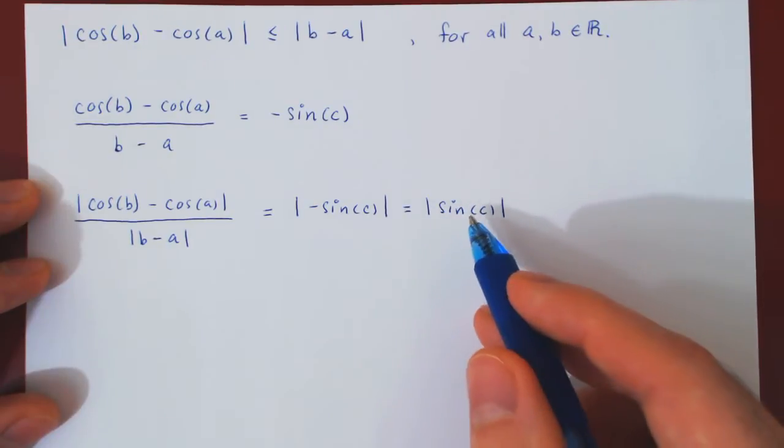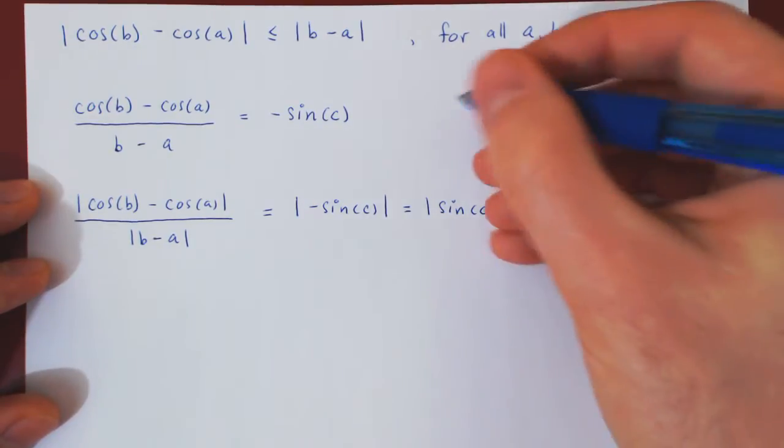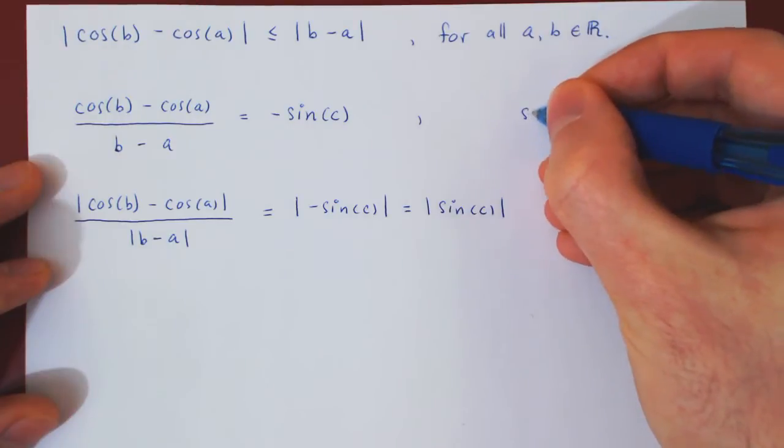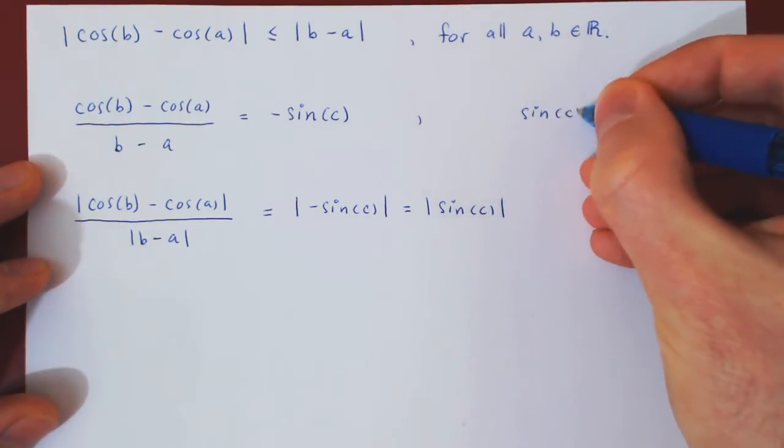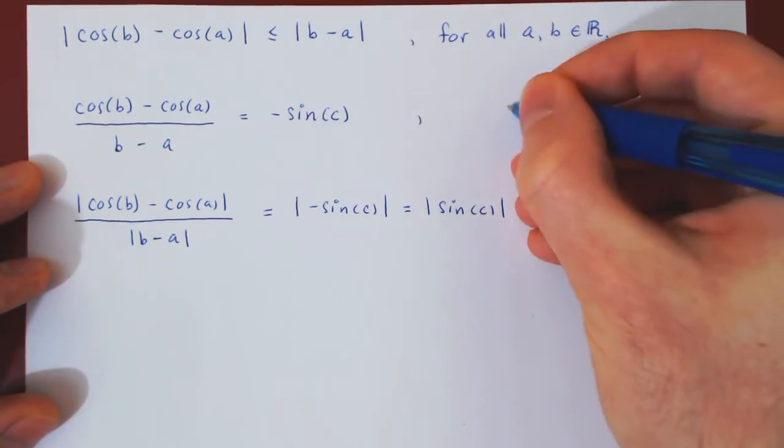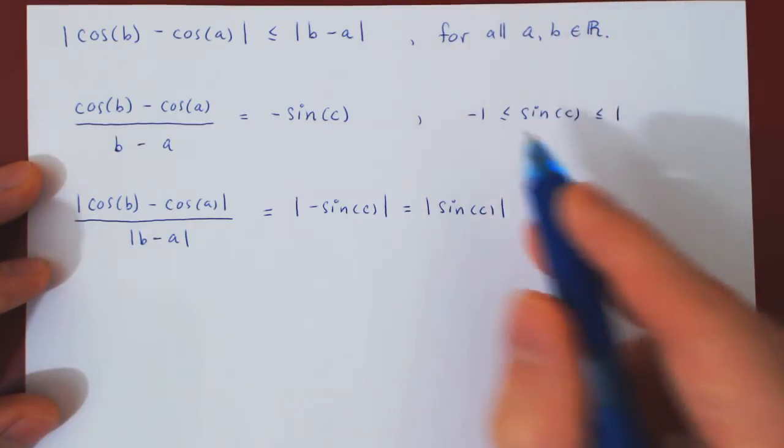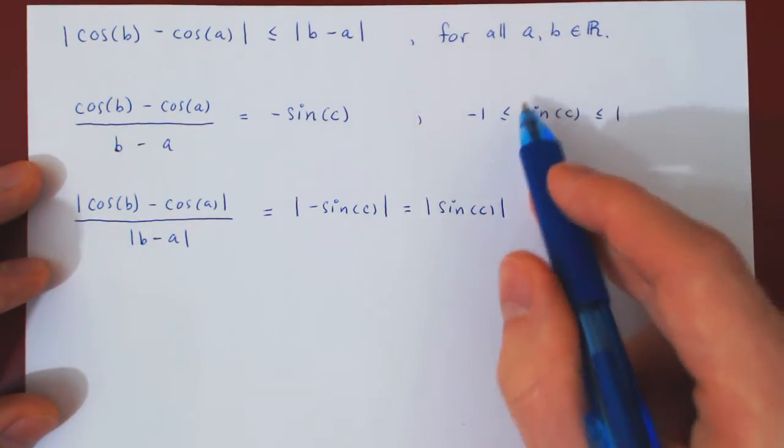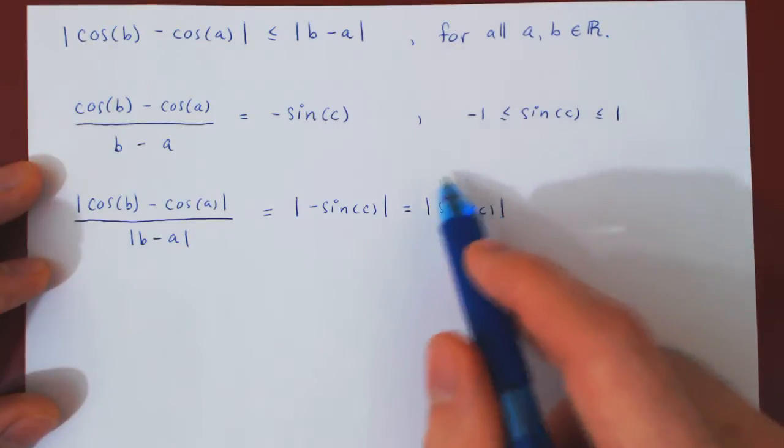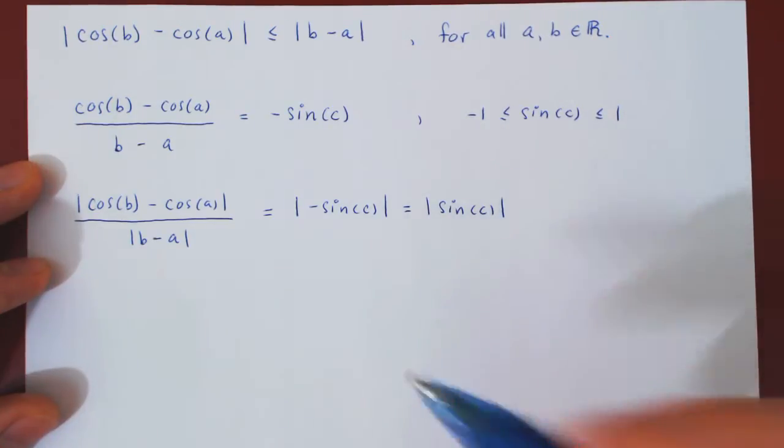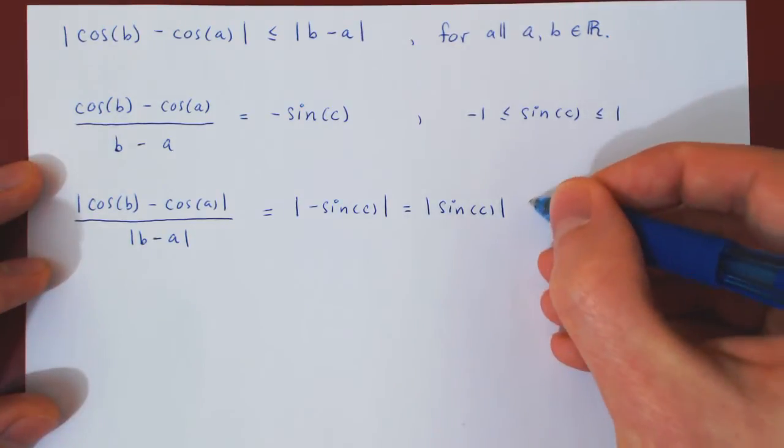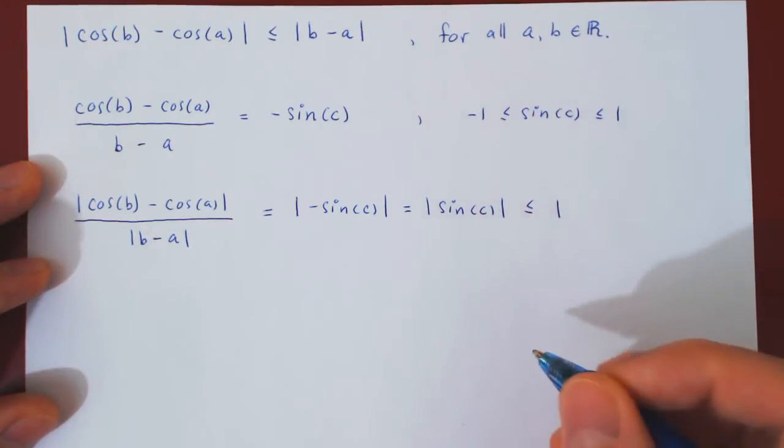And now we know that the sine function, for any value of c, is always between one and negative one. But if an expression is always between negative one and one, then in absolute value, it can never be larger than one. So this inequality is true.